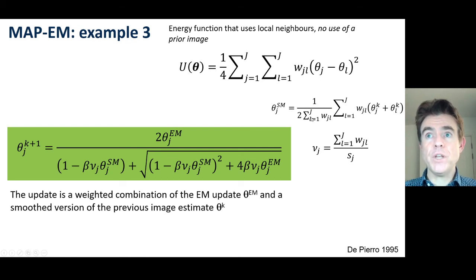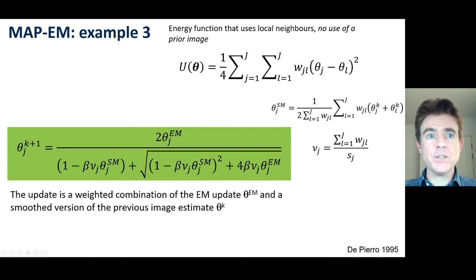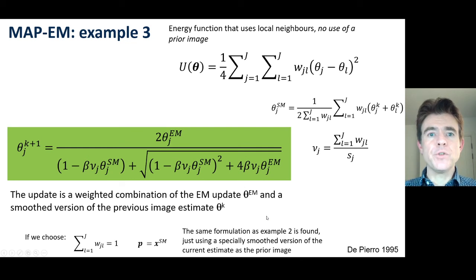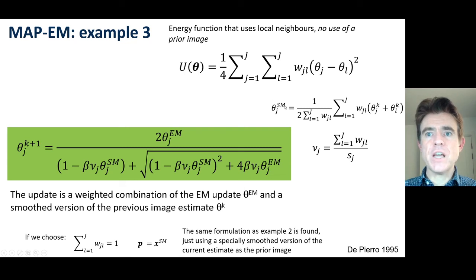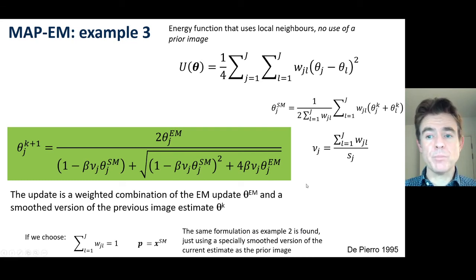you get an update expression that is just a weighted combination of the data-based EM update with a smoothed version of your current image estimate theta_k. Notably, if you configure this such that the sum of the weights equals one and set the prior image equal to theta_sm, you get the same update formula as in the previous examples.